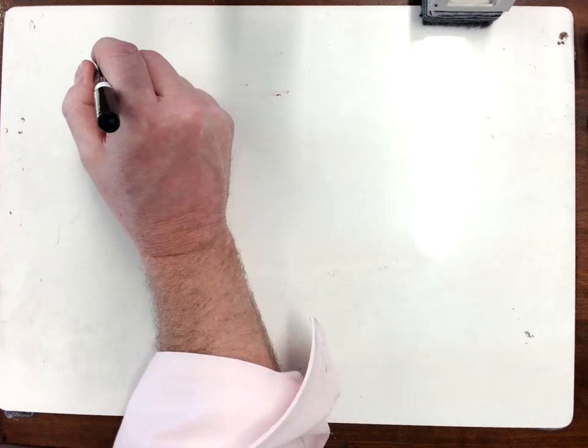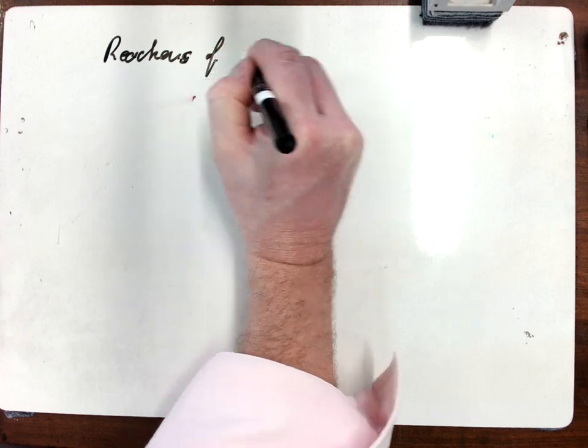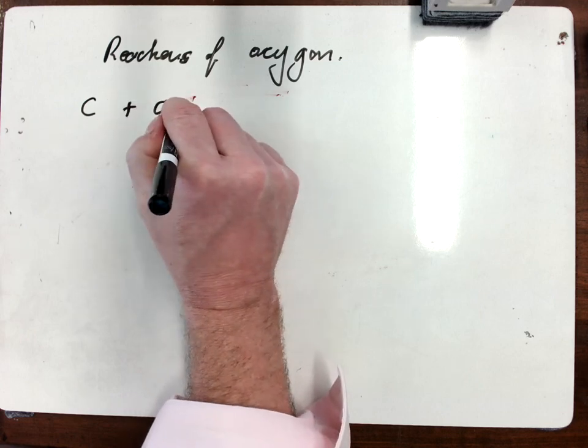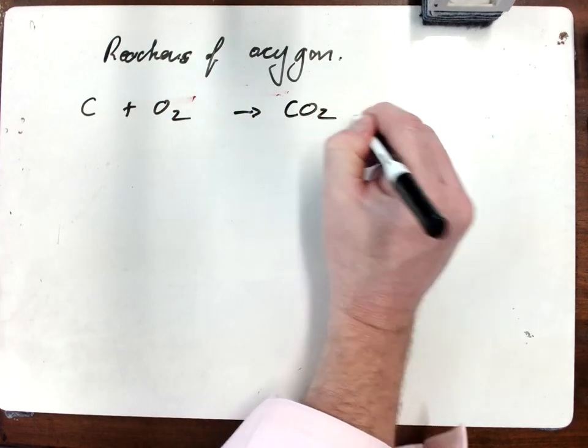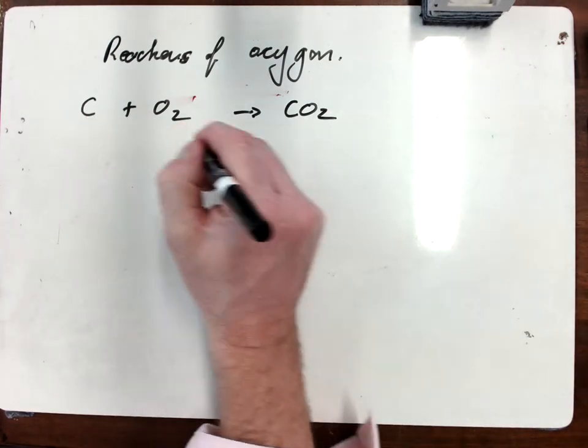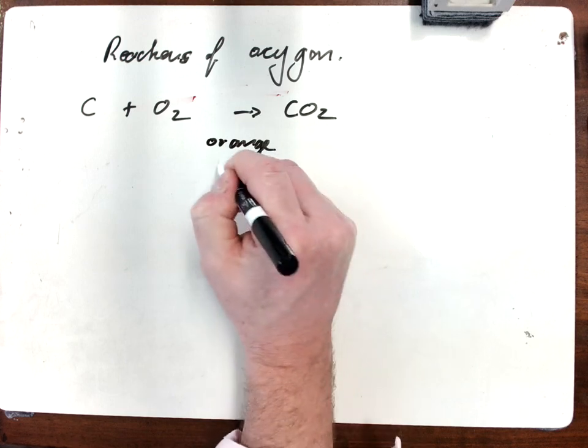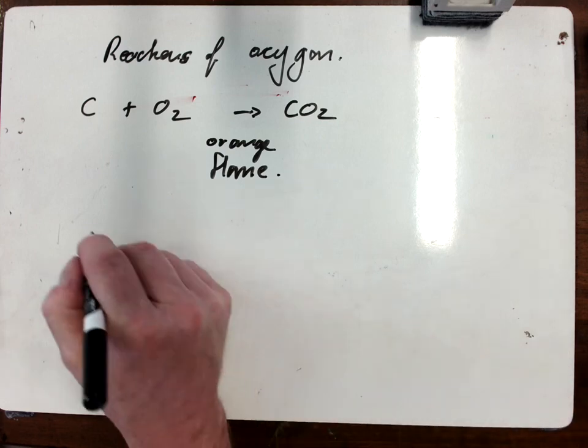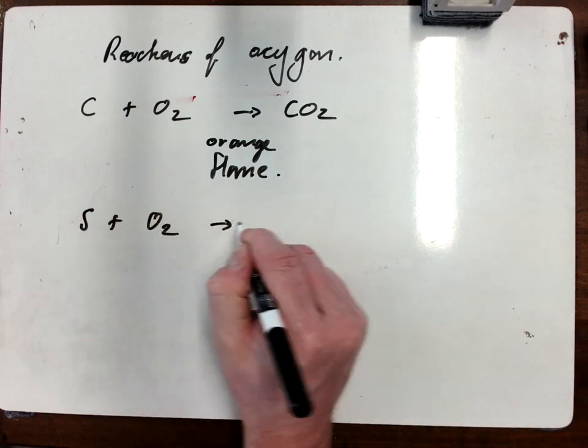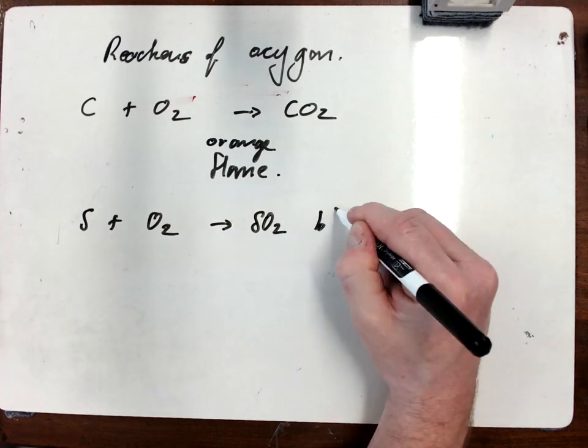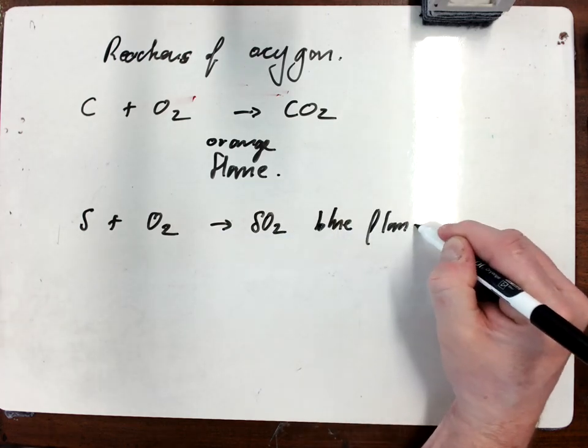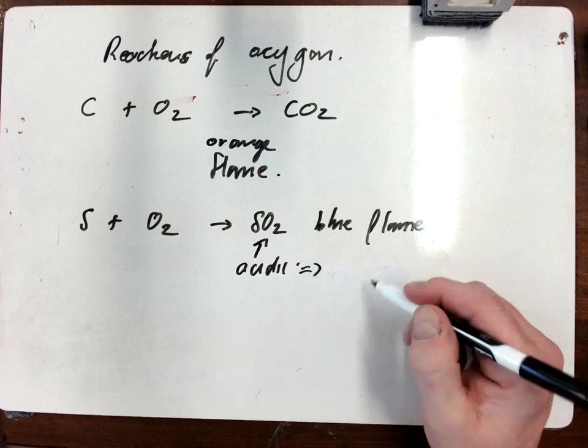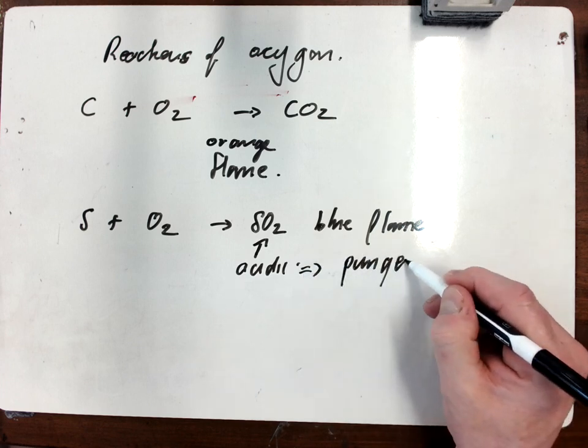You need to know a few reactions of oxygen. The first one is with carbon. Carbon with oxygen gives you simply carbon dioxide. When you burn carbon you burn it with a very orange flame, so the observation would be an orange flame. Sulfur - same principle, sulfur burned with a nice blue flame. It produces sulfur dioxide gas which is an acidic gas and really very unpleasant. We could describe it as a pungent smell, it's a very stinging horrible gas.